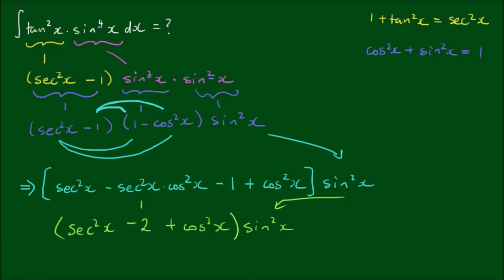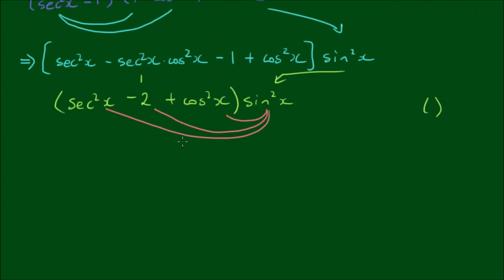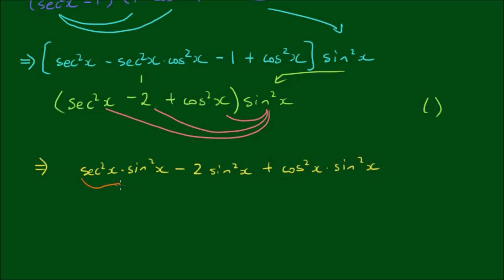Now this sec squared by cos squared — sec squared is equal to 1 over cos squared, so it's negative 1 over cos squared by cos squared. These cancel each other out to be minus 1. We have another minus 1, so minus 1 minus 1 gives us minus 2. And we write down the remaining terms: sec squared at the front, plus cos squared at the back, all times sine squared of x.